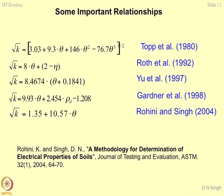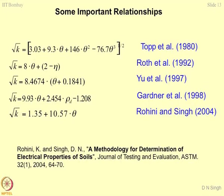Rohini published this work in 'Methodology of Determination of Electrical Properties of Soils' in the Journal of Testing and Evaluation, ASTM, and we extended this relationship for determining the in-situ dry density of the soil mass. Theta can always be correlated with w and gamma_d — that is, theta equals gravimetric moisture content multiplied by gamma_d divided by gamma_w. So if you know the dielectric constant of the soil system or a porous media, you can obtain its dry density very easily.